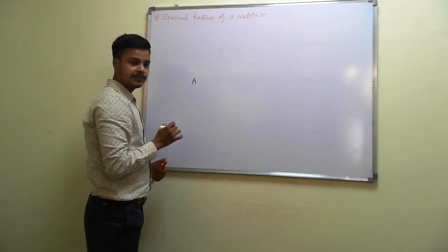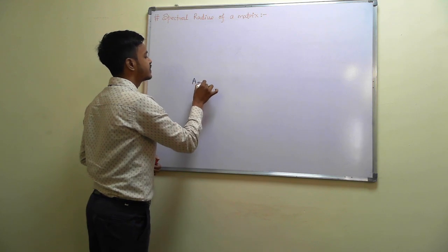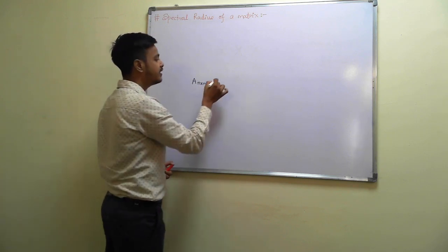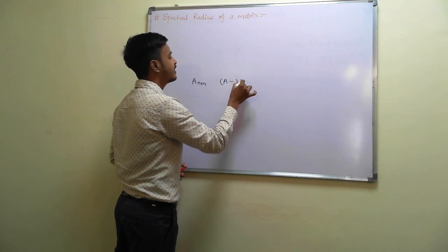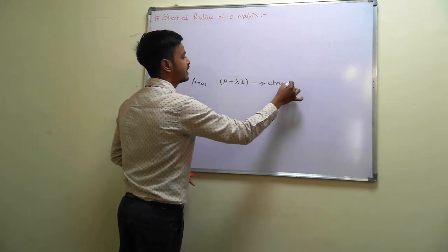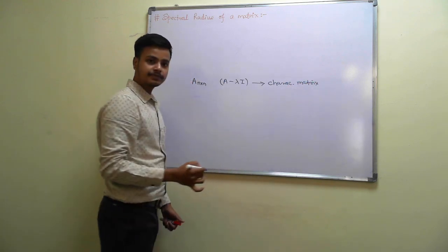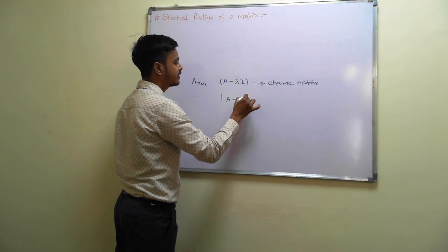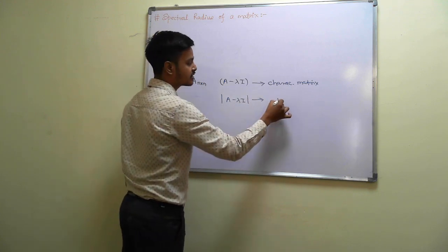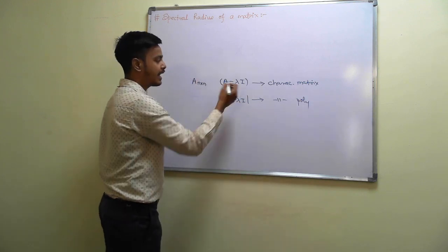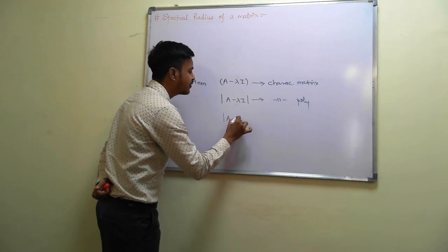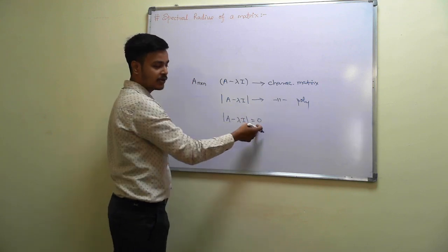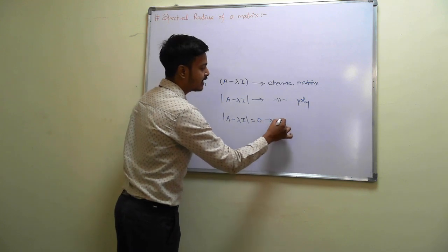Suppose you have matrix A, and say it is an n by n matrix. Then A minus lambda I is called the characteristic matrix. When we take the determinant of this characteristic matrix A minus lambda I, this gives you a characteristic polynomial in variable lambda. When you equate the determinant of A minus lambda I equal to zero, it becomes the characteristic equation.